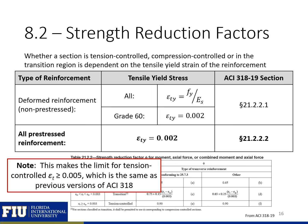The strength reduction factors are dependent on the yield strain in the material. For deformed or non-pre-stressed reinforcement, we use the actual yield strain for the material, except for grade 60 where we can assume a yield strain of 0.002. For all pre-stress reinforcement, we also assume a yield strain of 0.002, which gives us the previously used tension-controlled limit of 0.005.